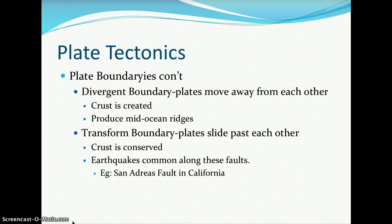At a convergent boundary, crust is being destroyed; at divergent boundaries, crust is being created. Our planet never really gets smaller or bigger because of this constant building and breaking down of both continental and oceanic crust.